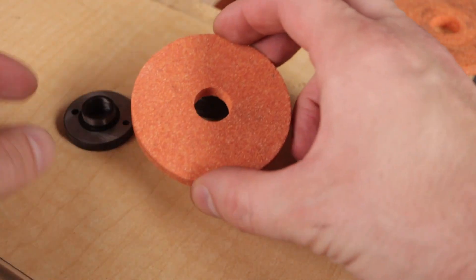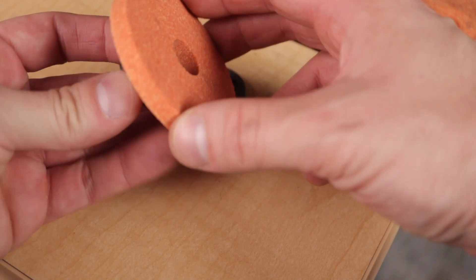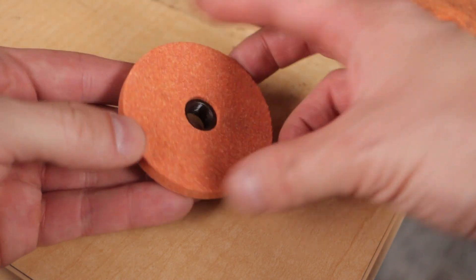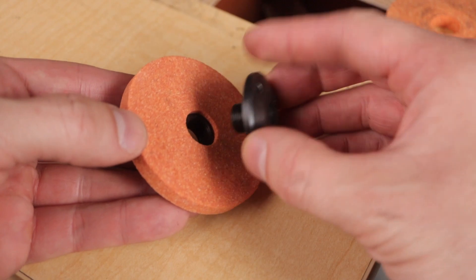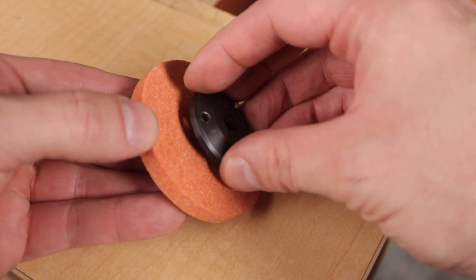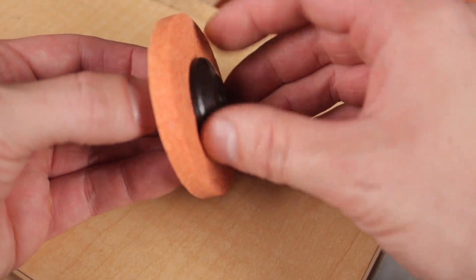A proper time to change out the sharpening stone is when you have worn it down halfway, and this is not a common or frequent item to replace. Now screw everything back together firmly.